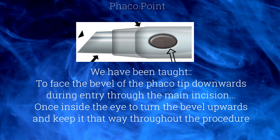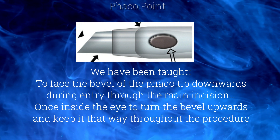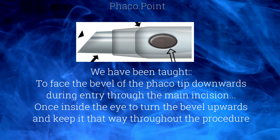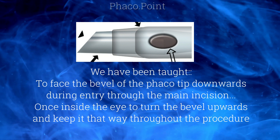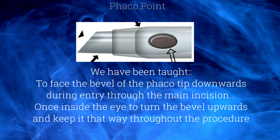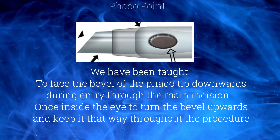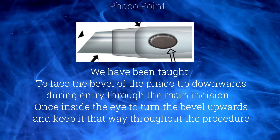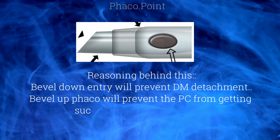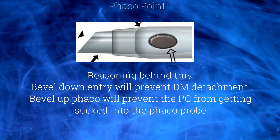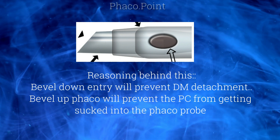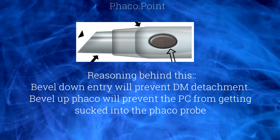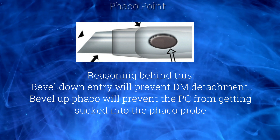What we've all been taught is that we should face the bevel of the FACO tip downwards during entry through the main incision, and once inside the eye we have been recommended to turn the bevel upwards and keep it that way throughout FACO emulsification. The reasoning is that a bevel-down entry will prevent Descemet's membrane detachment, whereas a bevel-up FACO will prevent the posterior capsule from getting inadvertently sucked into the FACO probe.